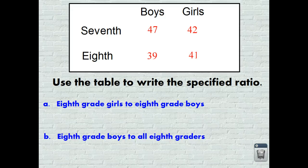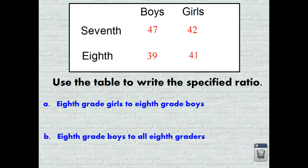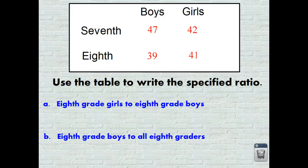In this example, we have a chart that lists boys and girls. We have 7th grade and 8th grade boys and girls. It says use the table to write the specified ratio. In part A, this is question one part A.